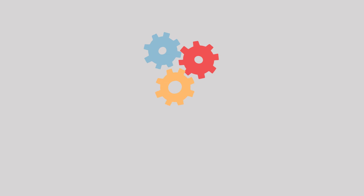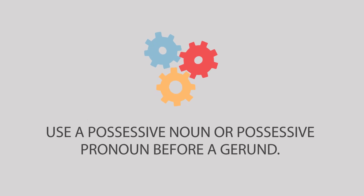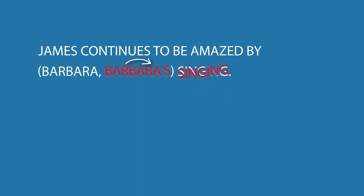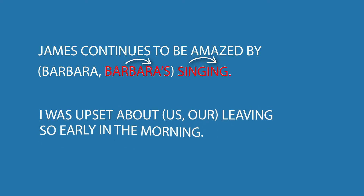Here's a rule that is often ignored: use a possessive noun or possessive pronoun before a gerund. Look at this sentence: James continues to be amazed by Barbara's singing. You would use the possessive Barbara's before the gerund singing. The same is true for this sentence: I was upset about our leaving so early in the morning. The possessive pronoun our should be used before the gerund leaving.